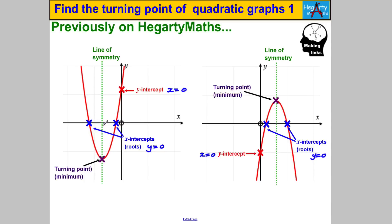Now, how are we going to find the turning point? The turning point is where the graph turns — in one case it's going down and then starts coming up, or in another case it's going up and then starts going down. You could also think of it as a minimum point or a maximum point — that's another way of phrasing these turning points.